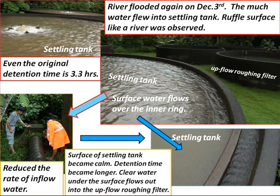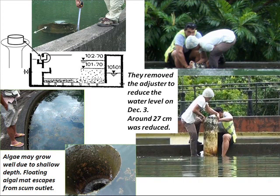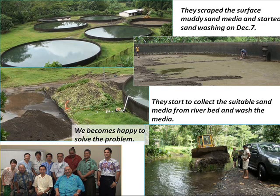We reduced the rate of inflow water. The surface of the settling tank became calm and detention time became longer. Clear water at the surface flowed out into the upflow roughing filter. They removed the adjuster to reduce the water level by around 20 cm so algae could grow well due to shallow depths. Floating algal mat escaped from the scum outlet. They scraped the surface muddy sand media and started sand washing, then began collecting suitable sand media from the riverbed.